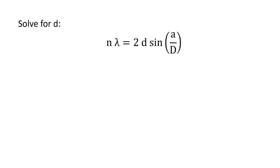Now we have an equation with variables n, lambda, little d, little a, and big D. The only variable we don't know is little d, which is the width of the hair. If we rearrange this equation, we can solve for the width of the hair.